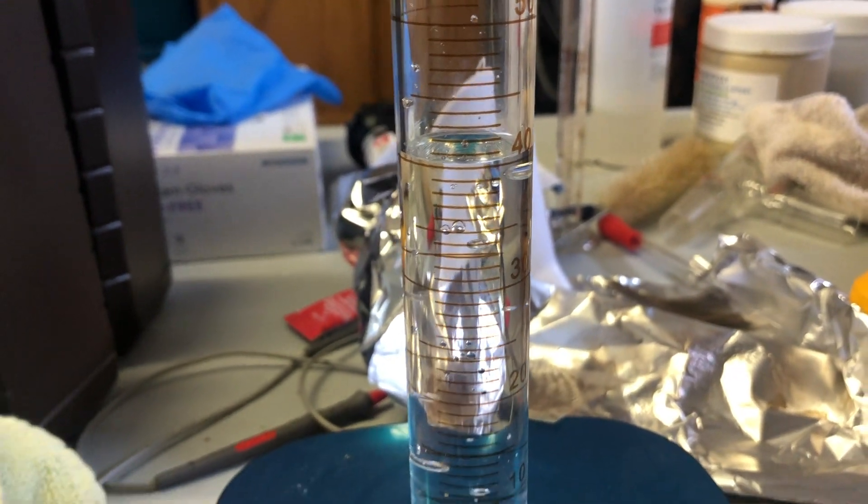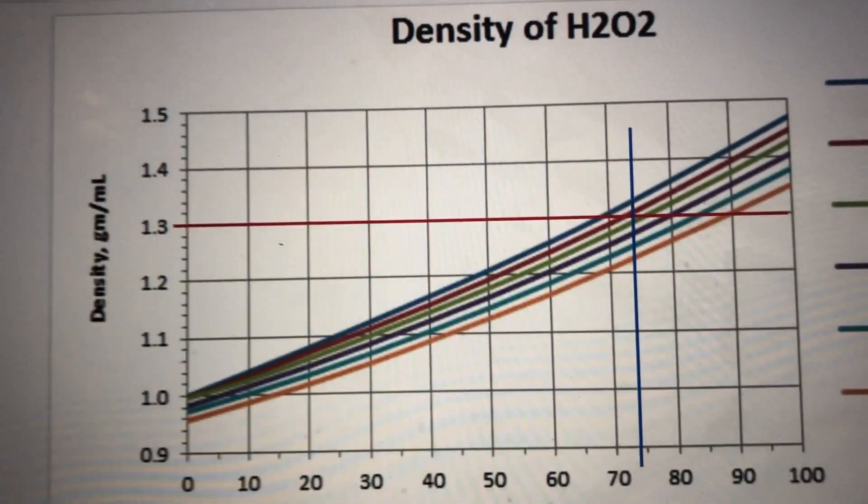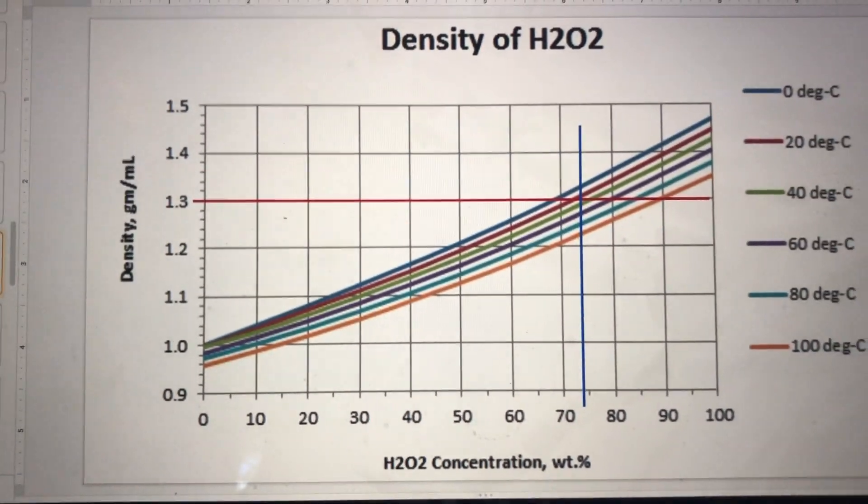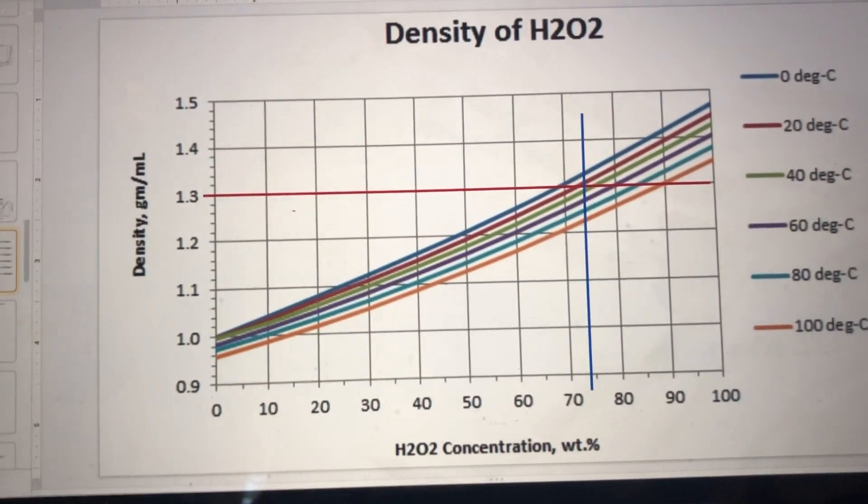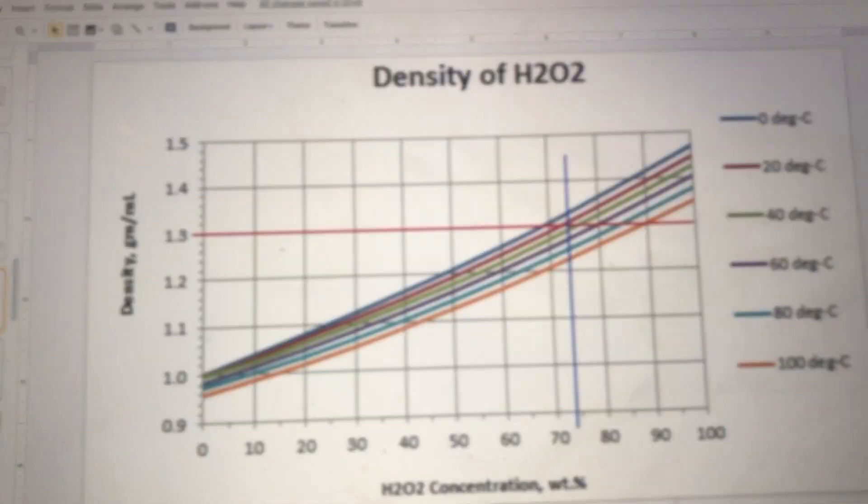The weight of about 40.1 milliliters is 52 grams. Which is a ratio of 1.3. So looking at it, we're about 74%. So well on our way to getting to 90. I'm gonna just put it back in the distiller and go for about another hour.